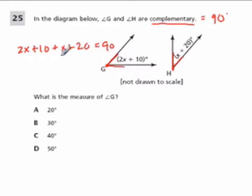So here I'm going to add like parts. X and 2X, that gives me 3X. 20 and 10, or 10 and 20, equals 30. So 3X plus 30 is 90.